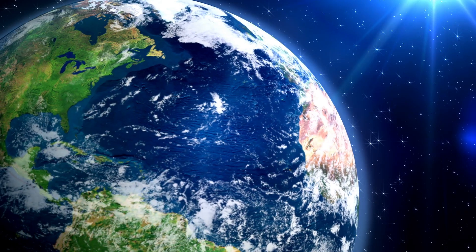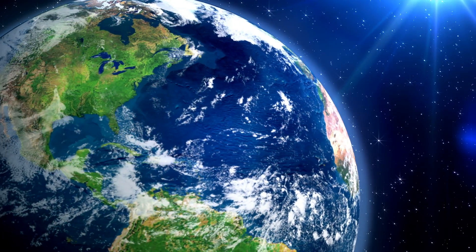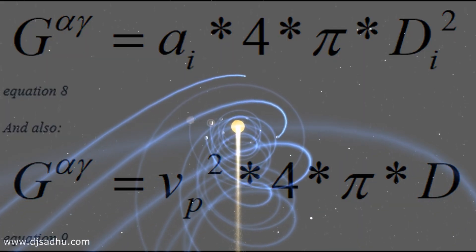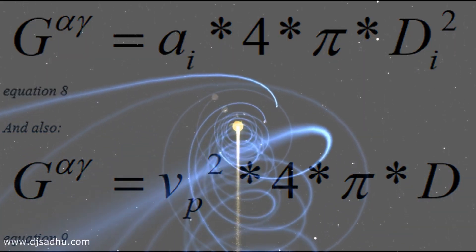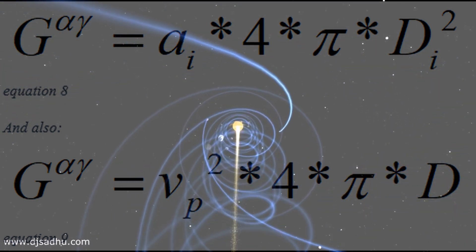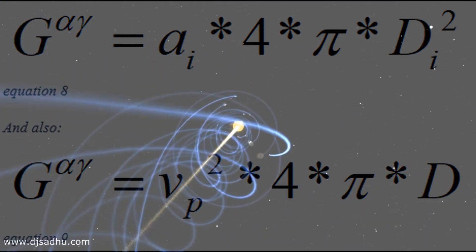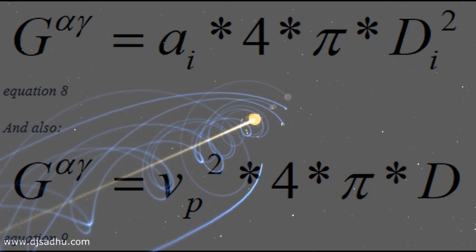From these equations, we derive equation 8 and 9 by replacing Gm by a times 4πr squared, because 4πGm equals a times 4πr squared, acceleration times the surface area.